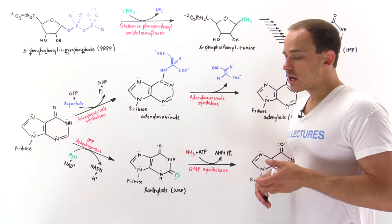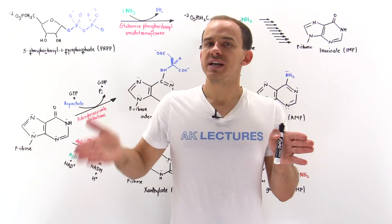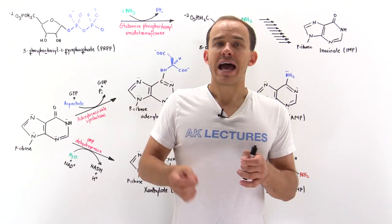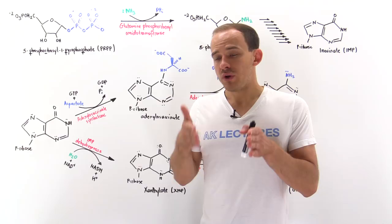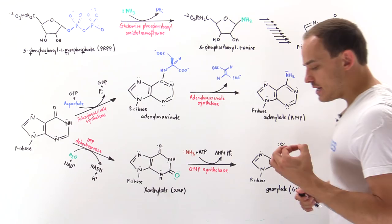In contrast to how we build pyrimidines, the way that we build purines is in the following way. We essentially initially begin with that sugar molecule and then we add atoms onto that sugar molecule to ultimately build that purine. This is in contrast to how we build pyrimidines in which we initially build that nitrogenous base and then attach it onto that sugar component, the PRPP.